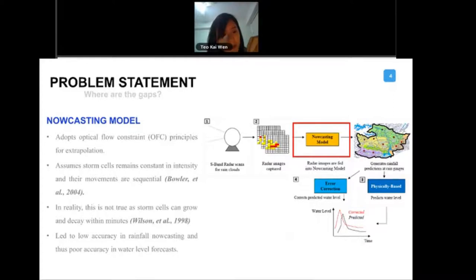So what this nowcast model will do is it will take in all your radar images and then extrapolate them into future radar images. Then you will translate them into future rainfall predictions. With the future rainfall predictions, you then fit it into a physically based model. This physically based model is something like your SWMM or your Mike Urban model. It gives you water level at various locations of the catchment. We also have an error correction module that will help us correct the error. So you have water level forecasts based on this setup.